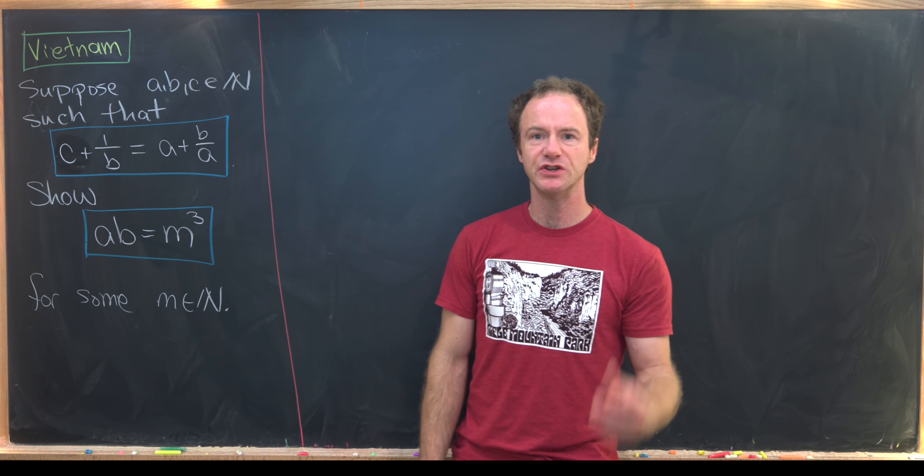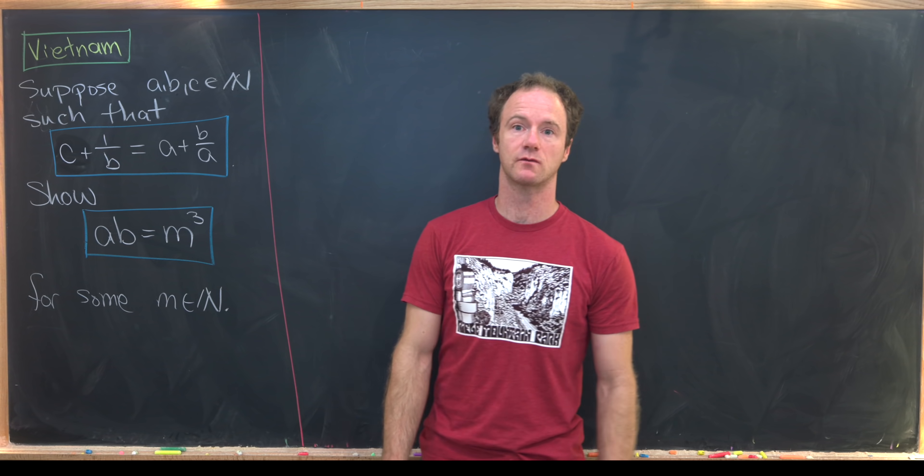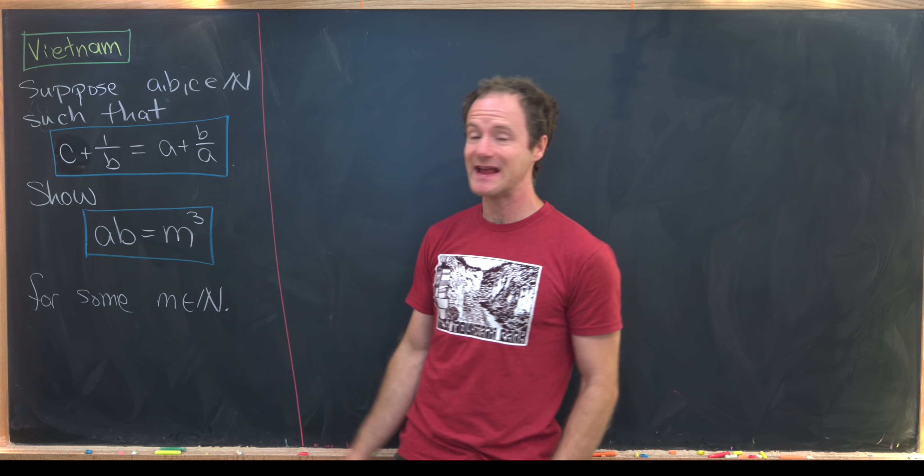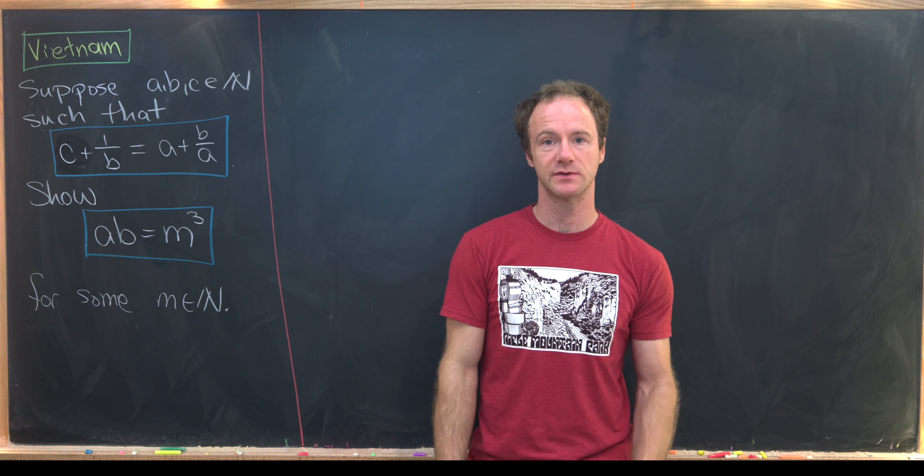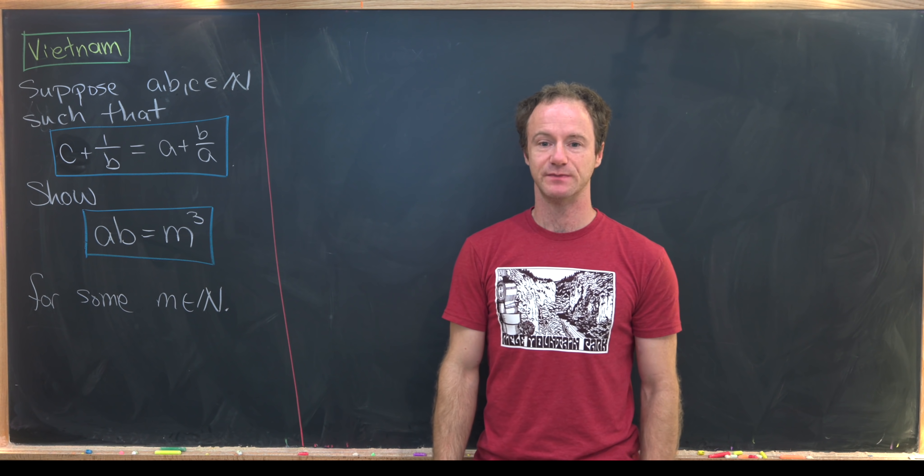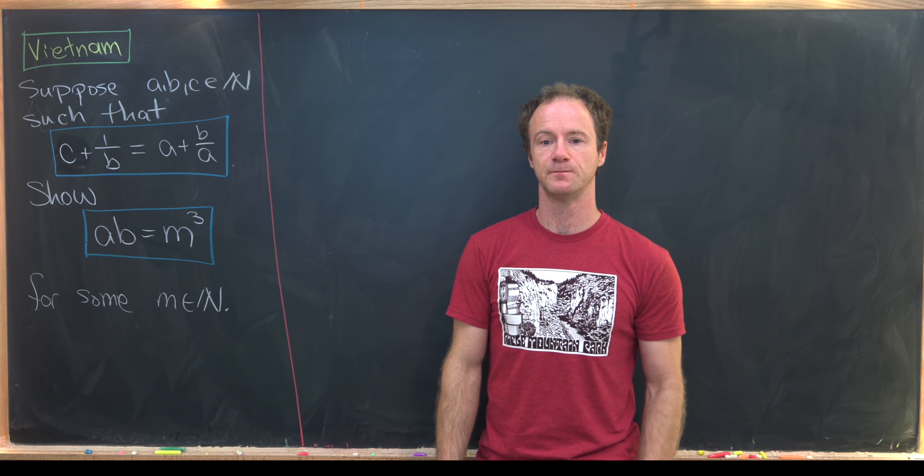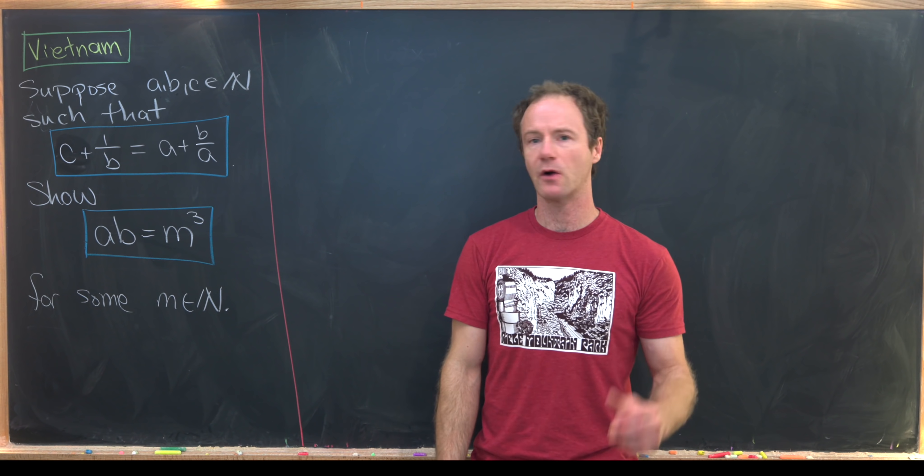And we want to use this given relationship to prove that A times B is equal to M cubed. So in other words, A times B is a perfect cube. Okay, so let's see how we can get started.